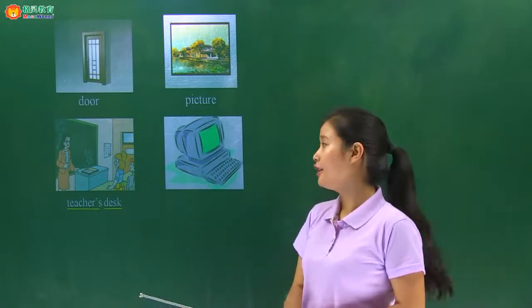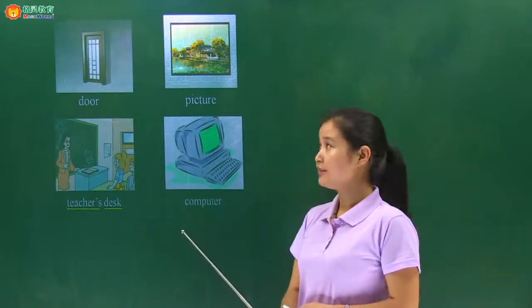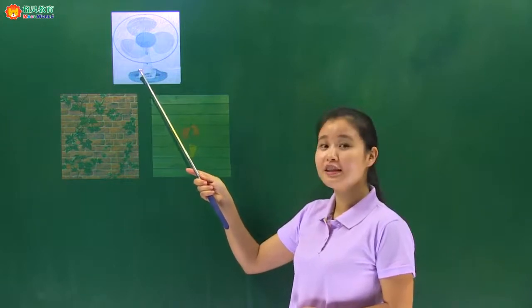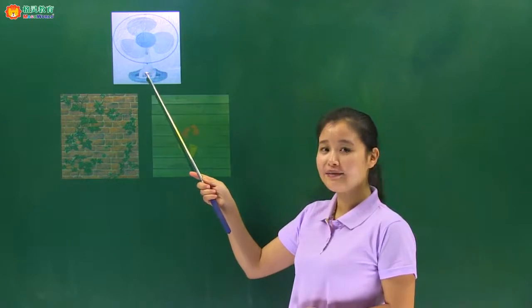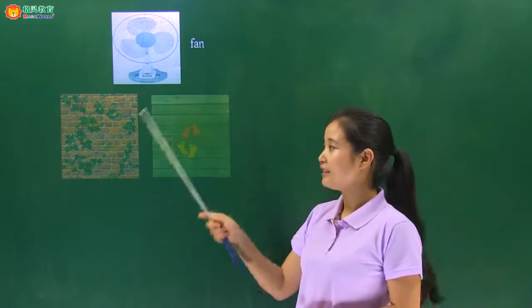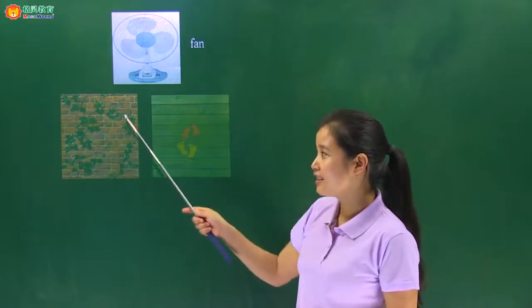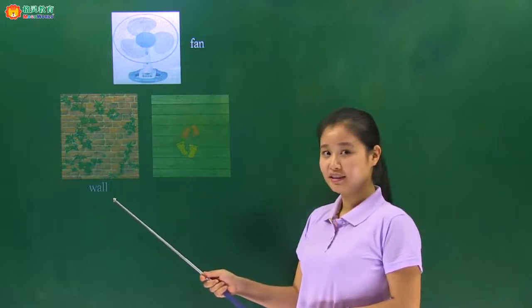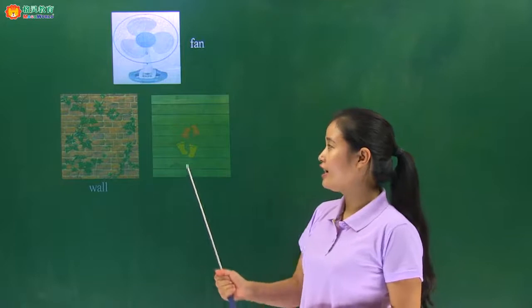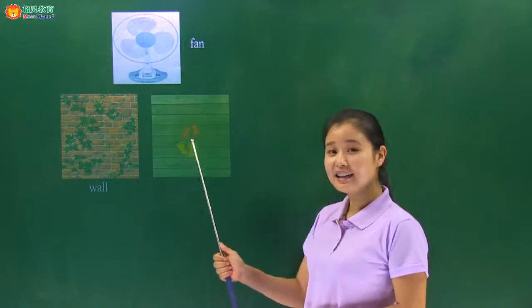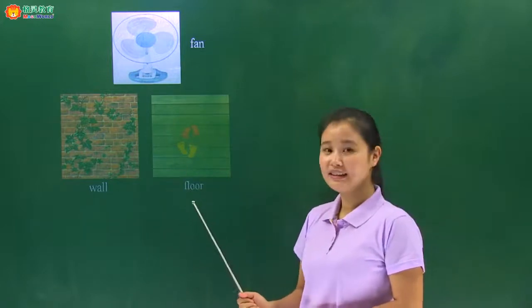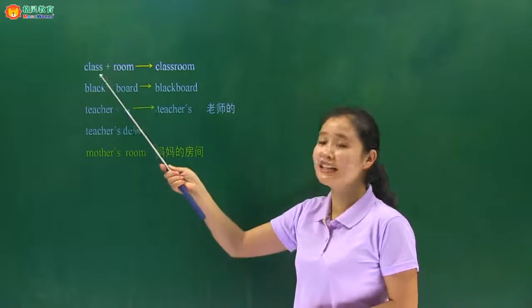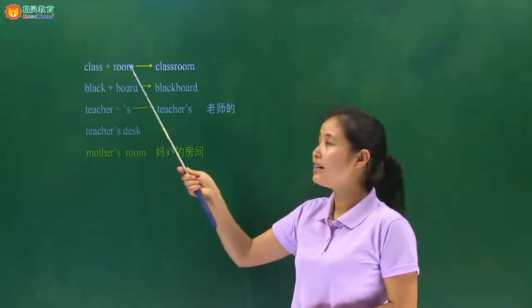Computer，电脑、计算机。这是一幅有风扇的图画，风扇，fan. This one，这是一堵墙，墙上还有一些花草，绿色的草，墙壁，wall. Last one，这是一块地板，我们看到上面还有两个人的脚印，地板，floor.